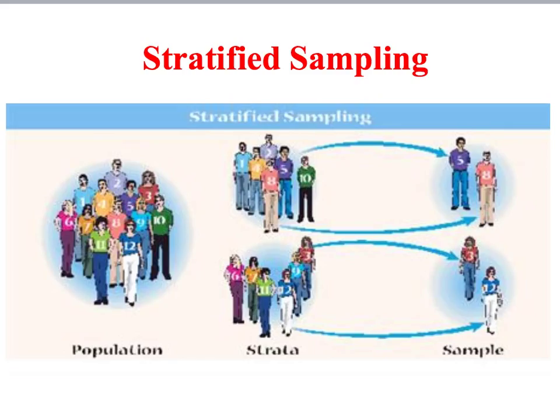Another more sophisticated way of trying to get a random sample is a technique called stratified sampling. In this technique, we divide our sampling frame into groups — what we call strata — in order to ensure that the sample is as representative as possible. For example, if the researcher has identified gender as an important variable, they would divide the population into two lists: one list of males and another list of females.